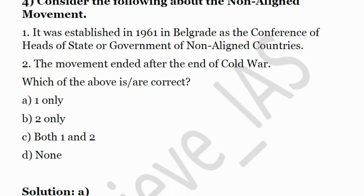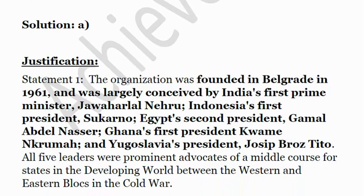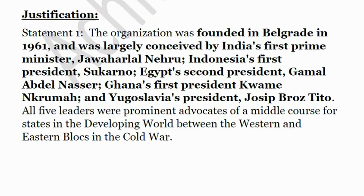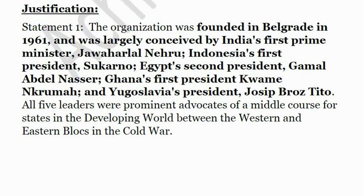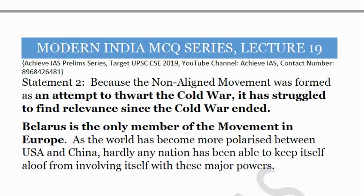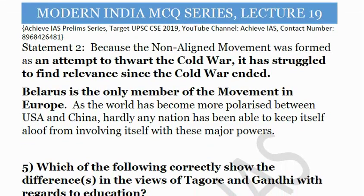The correct answer is A — statement one only. The main idea was conceived by India's first Prime Minister Jawaharlal Nehru, along with Indonesia's President Sukarno, Egypt's President Gamal Abdel Nasser, Ghana's President Kwame Nkrumah, and Yugoslavia's President Josip Broz Tito. These five leaders advocated a middle course when the world was divided into the western bloc led by the USA and the eastern bloc led by Russia. Belarus is notably the only European country that is a member of the Non-Aligned Movement.